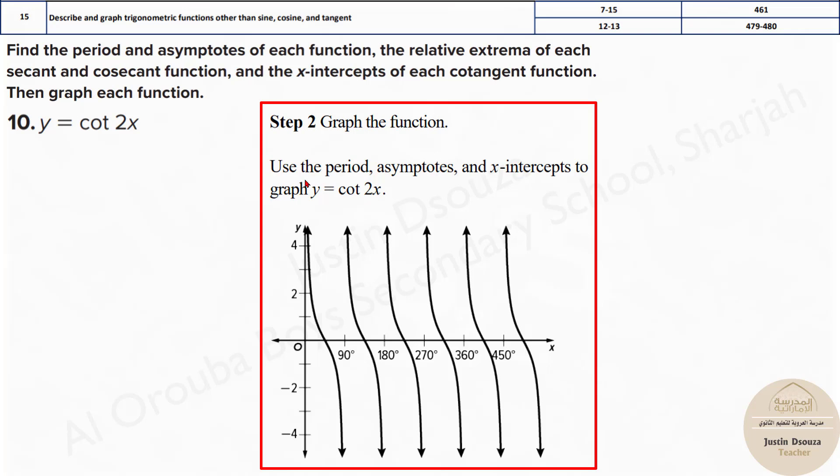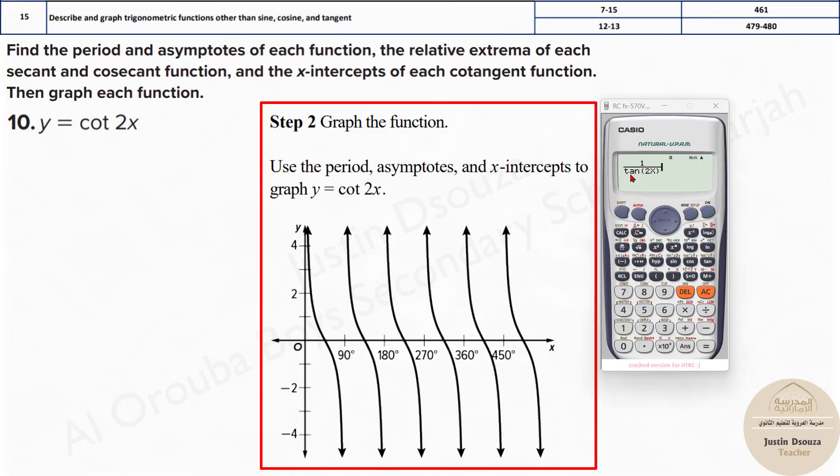For the cotangent function, we have to be careful because there are some values which will be undefined. I'll tell you the method to avoid that. First, let's use our calculators and write this out. We have to write it in terms of 1 by tan because cotangent equals 1 by tan. Now we write 2x. Now 0 here—let's calculate at 0. It is error.